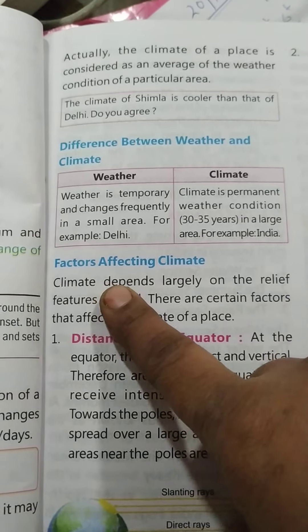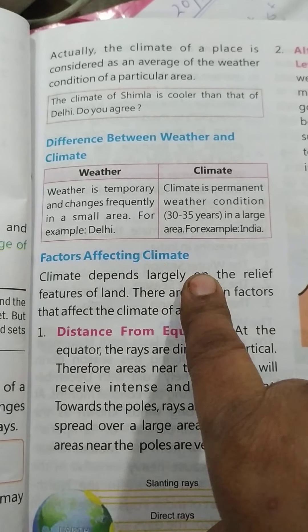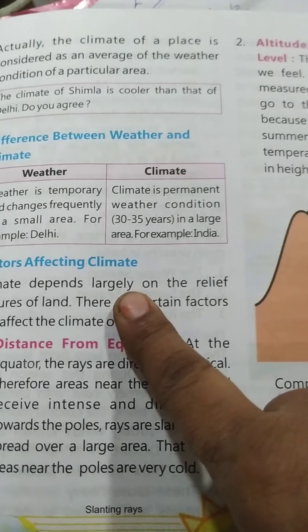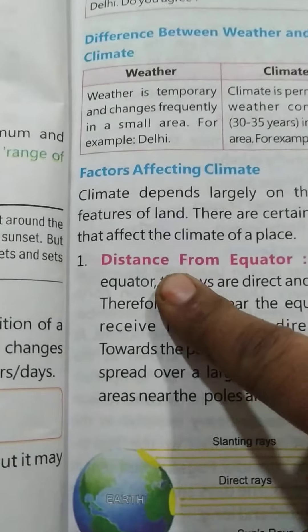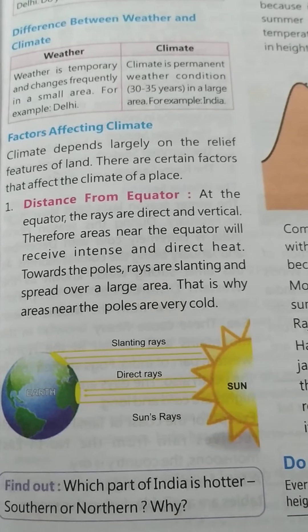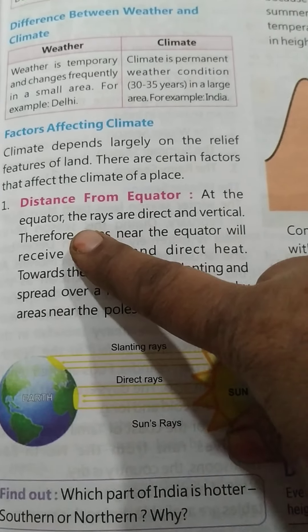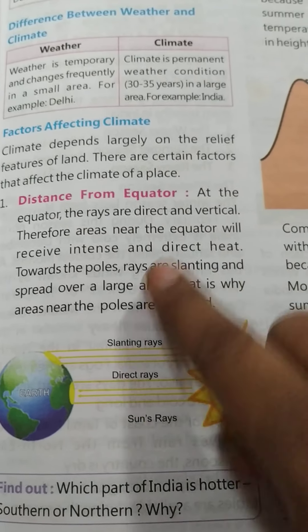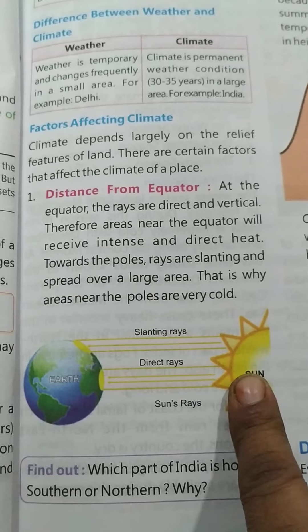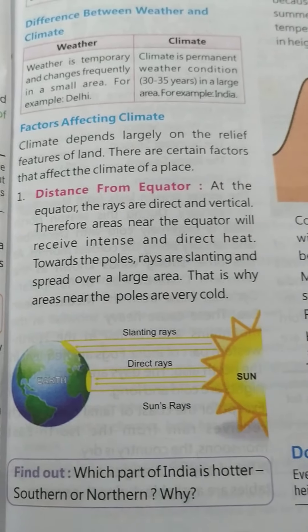The factors affecting climate include: first, the distance from the equator. At the equator, the sun's rays are direct — they are called vertical rays. Therefore, areas near the equator receive more heat.